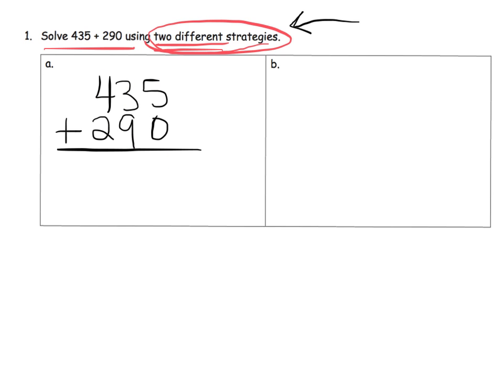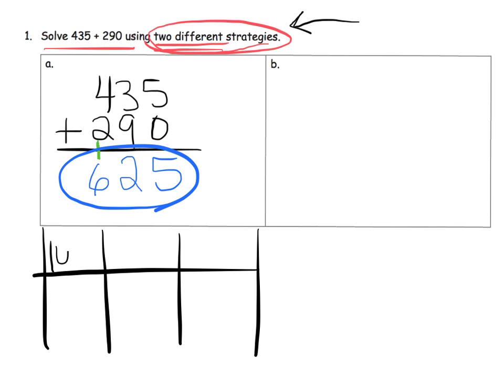But we'll throw the adults in the room a bone and we will solve this problem using the standard algorithm first. So we've lined everything up. 5 ones plus 0 ones equals 5 ones. 3 tens plus 9 tens, that equals 12 tens. That means we can bundle 10 of those together to equal 100, and we're going to have 2 tens left over. And then we have 4 hundreds plus 2 hundreds plus 100, that equals 600, so our answer is 625. Now by the way, parents, teachers, if we wanted to we could use a place value chart to verify that what we did was correct. I'm going to save us the time and I won't do that, but that's what we could have done.